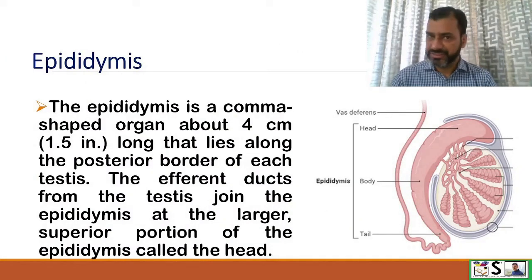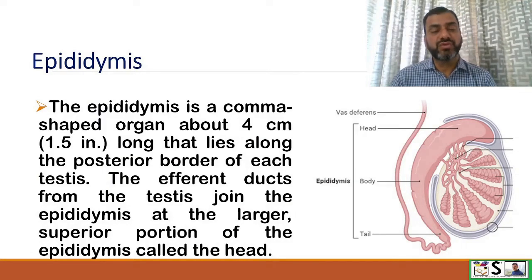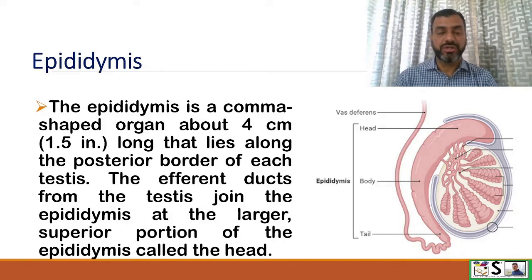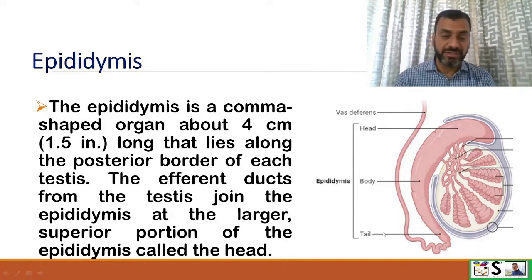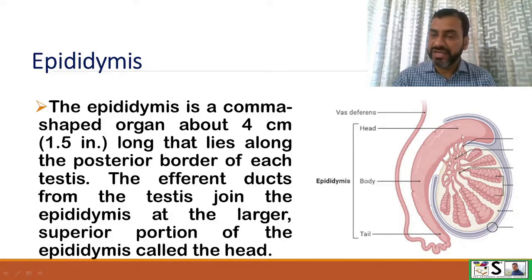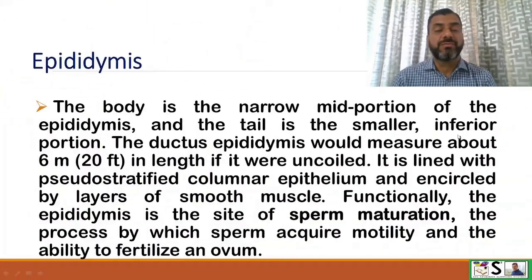The next structure is the Epididymis. The Epididymis is a comma-shaped organ about 4 cm long that lies along the posterior border of each testis. The efferent ducts from the testis join the Epididymis at the larger superior portion called the head. The body is the narrow mid portion and the tail is the smaller inferior portion.